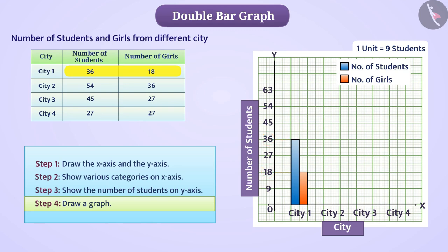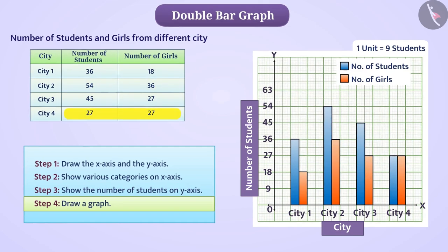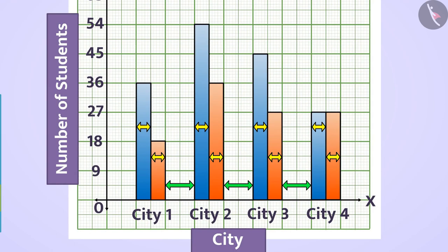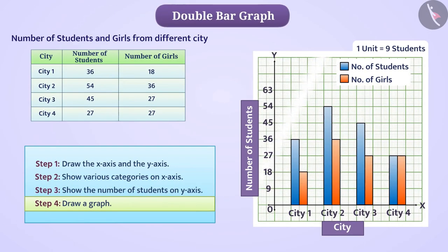Similarly, we will show the number of students coming from all the cities and the number of girls in pictorial form. Remember that we will keep the same width of each bar and keep the same distance between the pair of bars made for different cities. This will give us double bar graph.